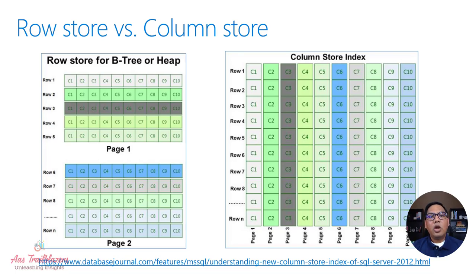For column store index, data for a given column are stored together on a single page. This type of arrangement works best for analytical workload in which you query large volumes of data or large numbers of rows, but only select few of those columns from that table.